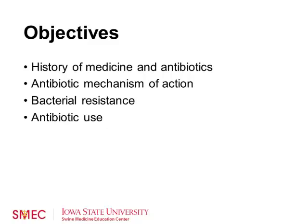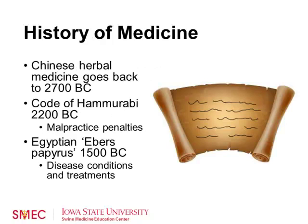Around 2700 BC, Chinese herbal medicine began, and it is still in use today in many parts of the world, including the US. The Code of Hammurabi was established around 2200 BC, and this is where malpractice penalties were first discussed.